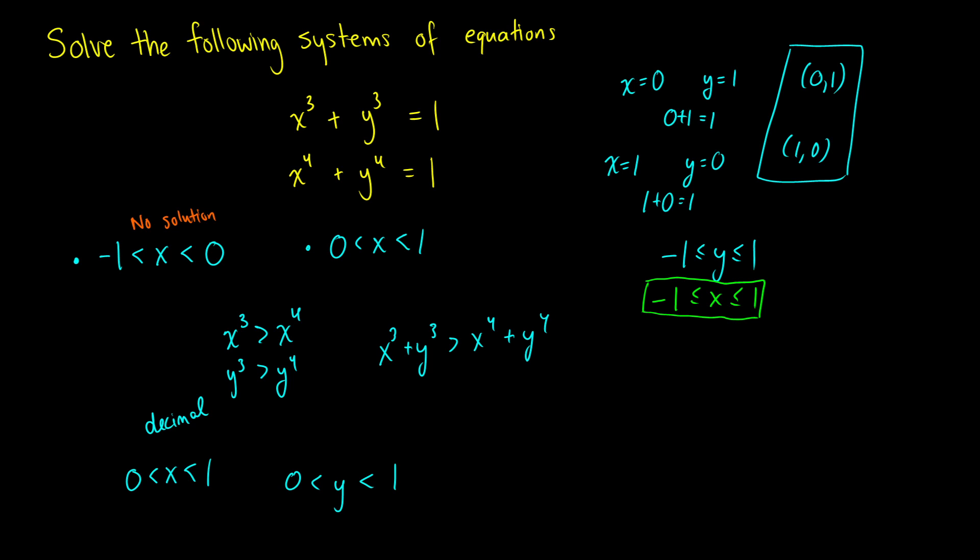But this here is impossible. Why is this impossible? Because these are both supposed to be equal to 1. Therefore, if we follow this line of reasoning, we see that there's no solution where x is between 0 and 1.